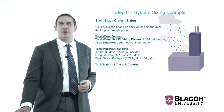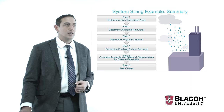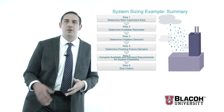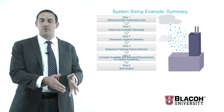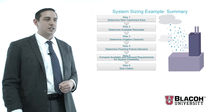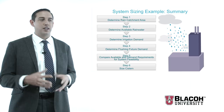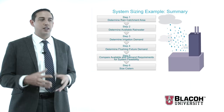To summarize this section: your first step in system sizing is to determine your rain catchment area. Your second step is to determine your available rainwater using: monthly rainfall × loss factor × runoff coefficient × catchment area. The next step is to determine your irrigation demand if applicable, then your flushing fixture demand or other uses such as cooling towers. Compare available and demand requirements for system feasibility — targeting 50% or better on average — and then size your cistern accordingly.